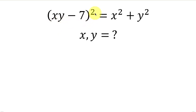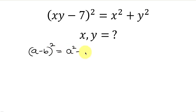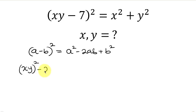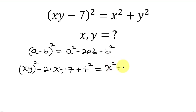Our first step will be to expand the left-hand side. The left-hand side is of the form (a - b)², which expands as a² - 2ab + b². So this becomes (xy)² - 2(xy)(7) + 7², and this is equal to the right-hand side, x² + y².